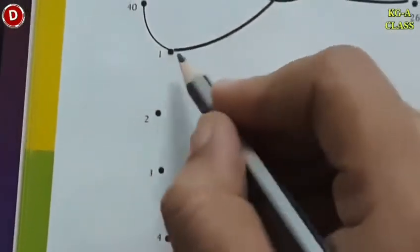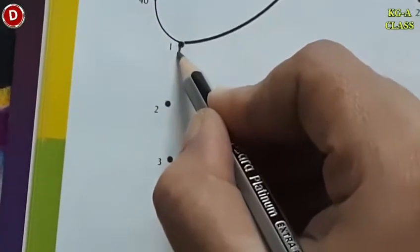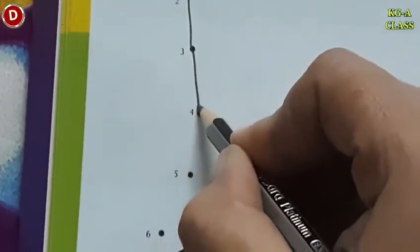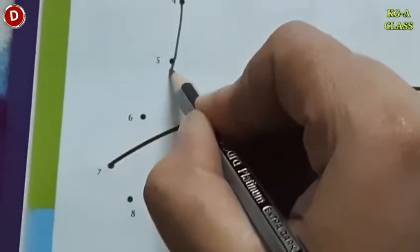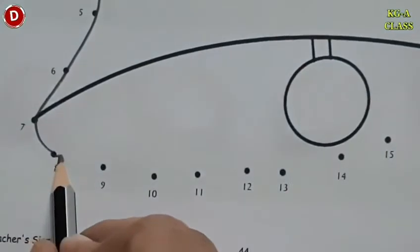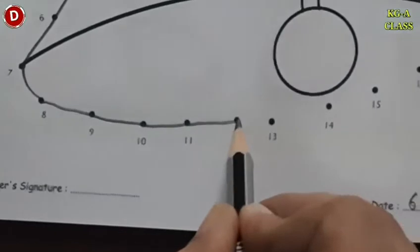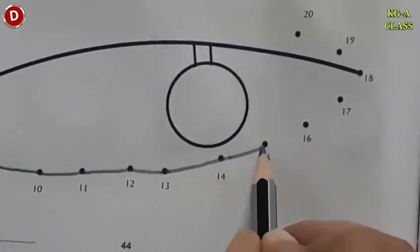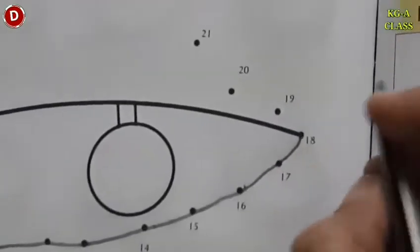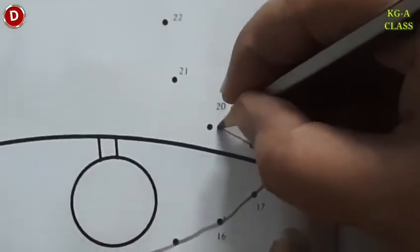We will start from number 1. Put your pencil on the dot which has number 1 and say the counting also. After 1 comes 2, then 3, then 4 — we move forward like this: 5, 6, 7, 8, 9, 10, 11, 12, 13, 14, 15, 16, 17, and then comes 18. After 18, we move forward: 19, 20.